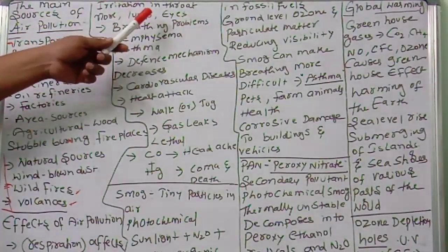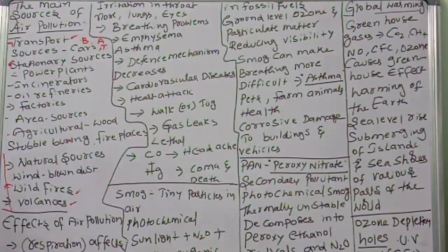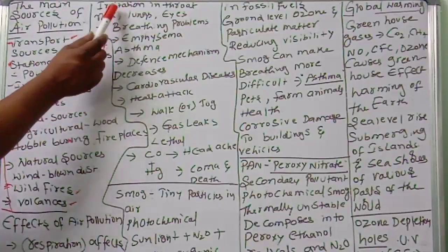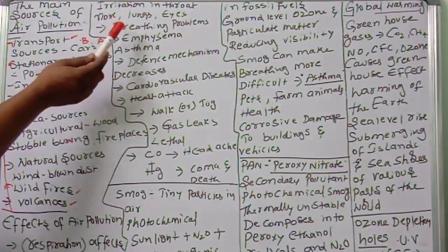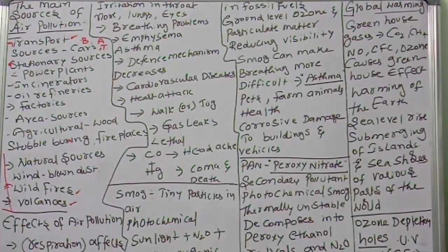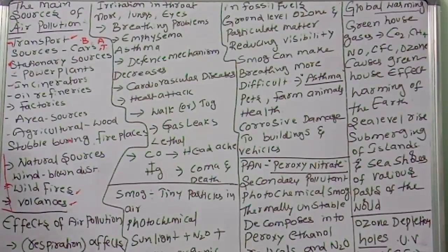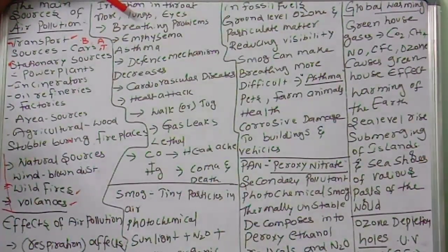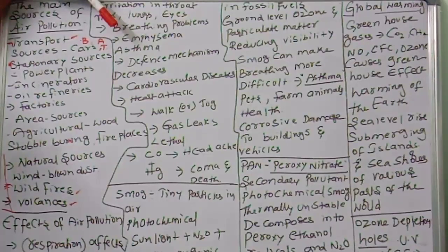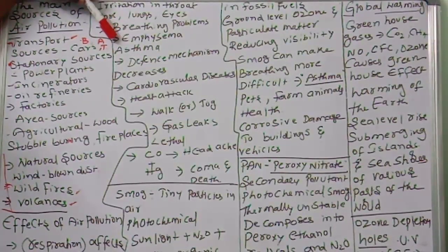Air pollution causes irritation in the throat, nose, lungs, and eyes. It causes breathing problems and aggravates existing health conditions such as emphysema and asthma. When you inhale polluted gases daily, you will get irritation in the throat, nose, and lungs, continuous cough, irritation in the eyes, and breathing problems. These health conditions will be completely disturbed, leading to dangerous conditions like emphysema and asthma.